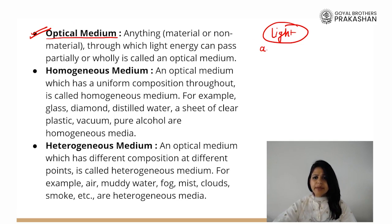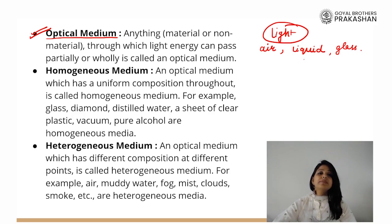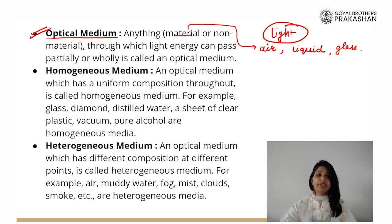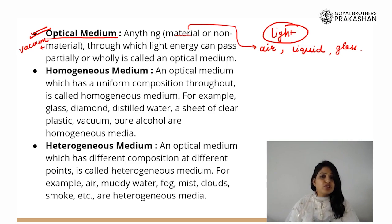For example, we know light can pass through air, that means it can pass through gas. Light can pass through water or a liquid, and it can also pass through solids such as glass which are transparent. So optical medium can be a material and light can pass through all three states of matter. A non-material example is the space between earth and sun — it is vacuum, an absence of any material — but light can pass through it.